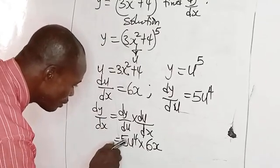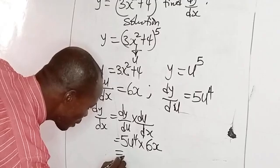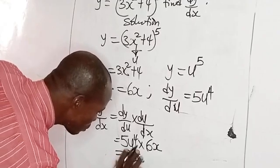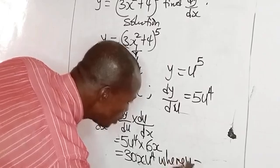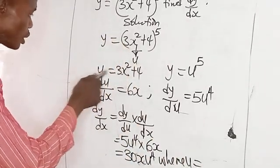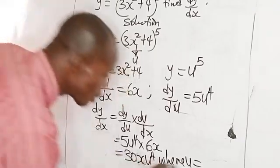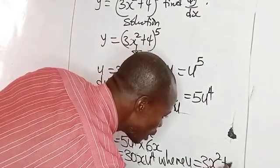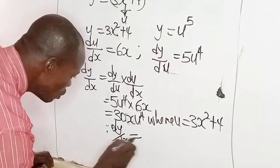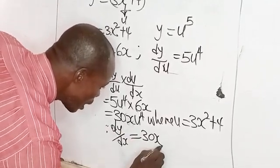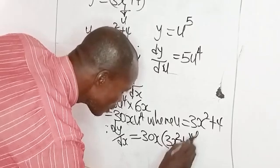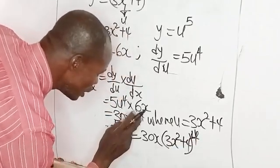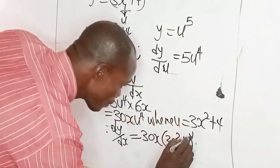So let's multiply 5u⁴ times 6x, so you have 30x u⁴, where u is 3x² + 4. Therefore, dy/dx will be 30x, where u is 3x² + 4, raised to power 4.